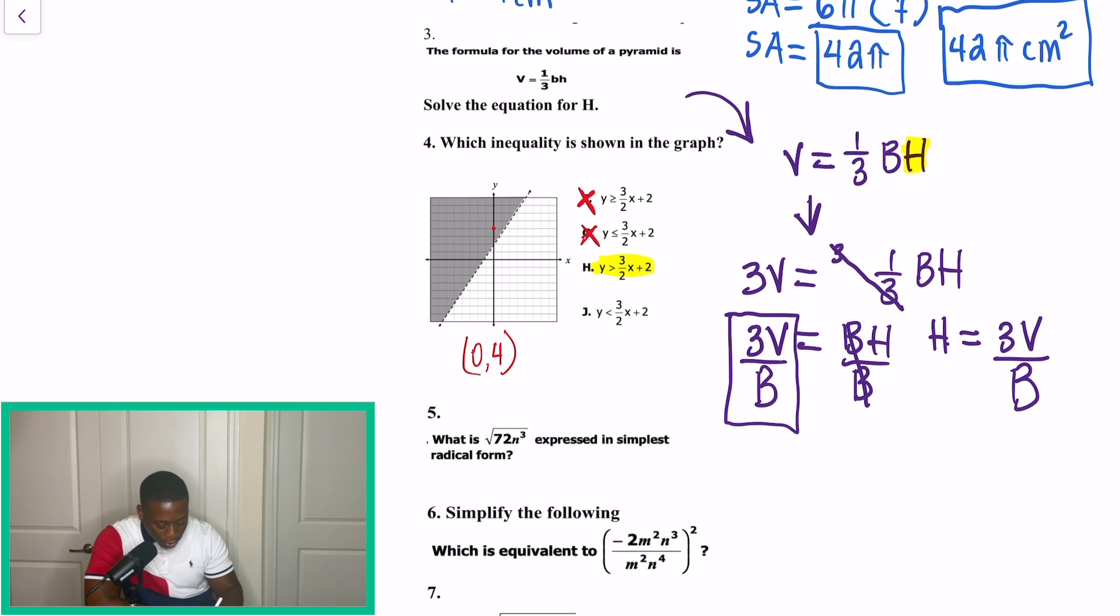We have 0, 4, and we substitute it. So we're saying 4 is greater than 3 over 2 times 0 plus 2. And when we look, we would say that 4 is greater than 2. So that's just a quick way to check that problem off. Like I said, we have a video on inequalities, matching them with their graph, coming up in the upcoming weeks. So please be on the lookout for that.